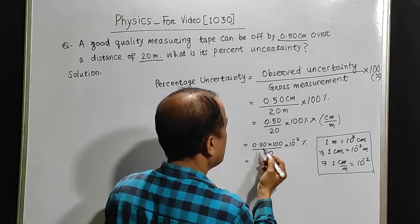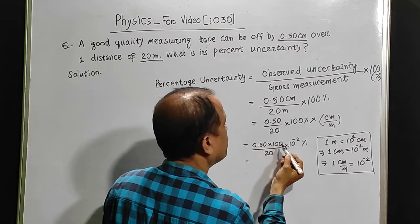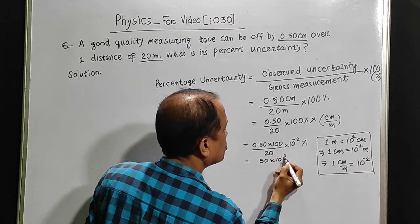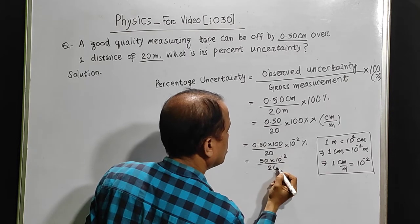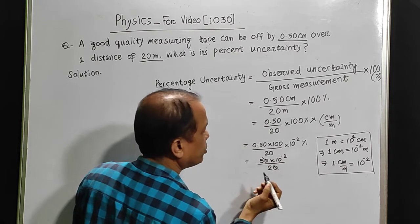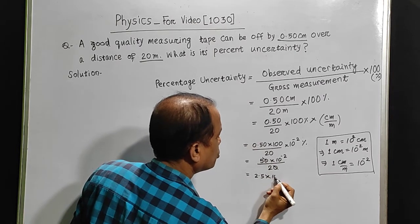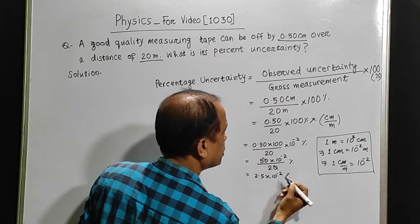Then we have 0.50 into 100, which is 50 into 10 to the minus 2 upon 20. We can cancel, and we get 2.5 into 10 to the minus 2 percent.